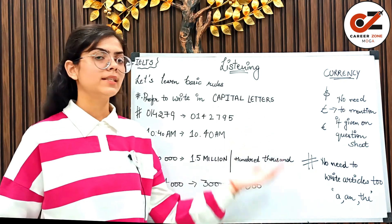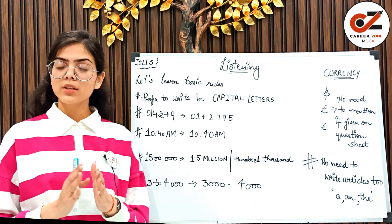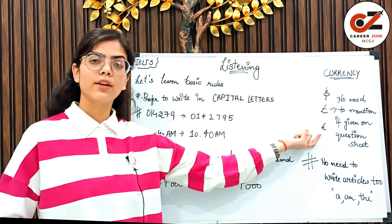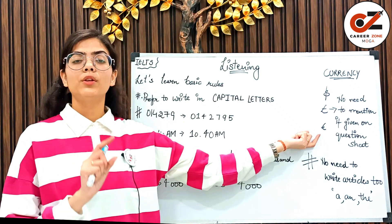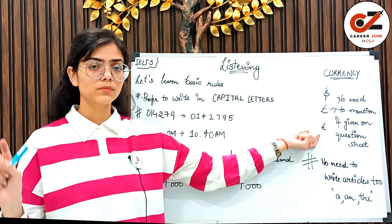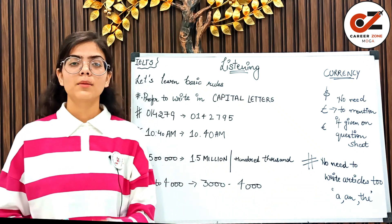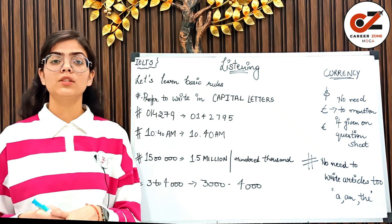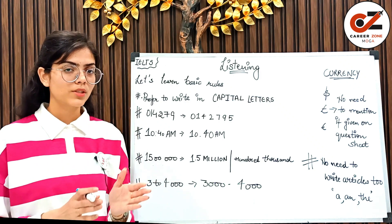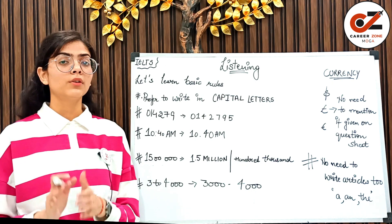If we talk about currency signs — dollars, pounds, and euros — you just need to remember that whenever these currency signs are given on the question sheet, you will not transfer them along with your number. For example, if the cost of accommodation per month is $450 and the dollar sign is already given on the question sheet, you will not write it again on the answer sheet. You will directly transfer '450.'